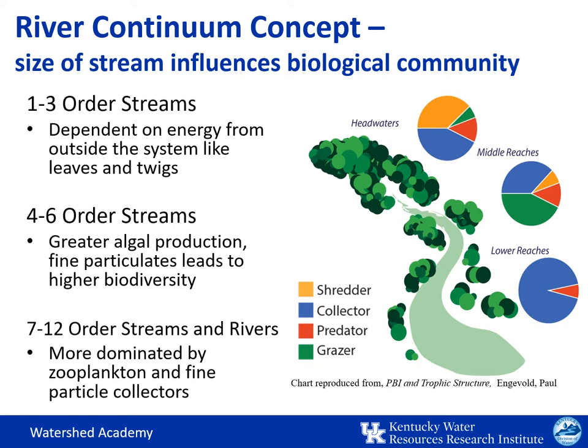Smaller headwater streams are dependent on a variety of microorganisms to convert energy from organic matter entering the stream. These include shredders, grazers, collectors, and a few predators. In larger streams, more algal production is occurring in the water itself, which changes the composition of organisms it can support and allows for greater biodiversity. In even larger systems, the increased diversity of aquatic life supports a range of zooplankton and other fine particle collectors that can support larger fish and other aquatic animals.